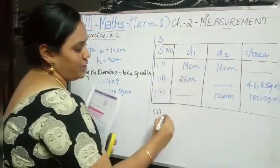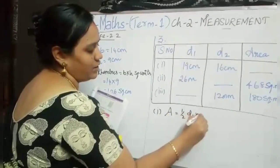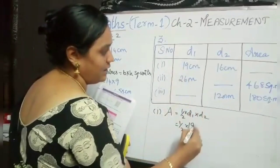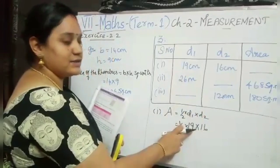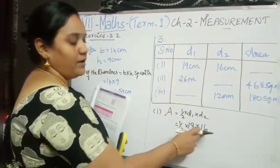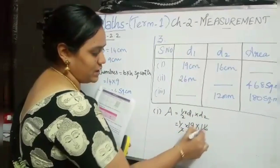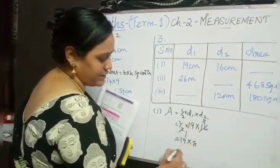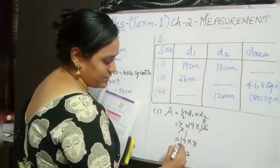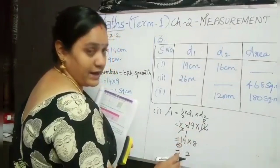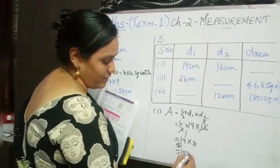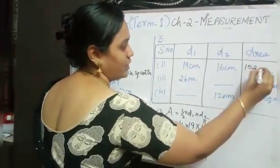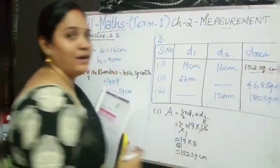For the first option, area equals half into D1 into D2. So half into D1 is 19 and D2 is 16. Since 19 is an odd number, we are going to cancel 16: 1 2s are 2, 8 2s are 16. So we have 19 into 8. Multiplying: 8 9s are 72, carry 7; 8 1s are 8, plus 7 is 15. So the answer is 152 square centimetre.